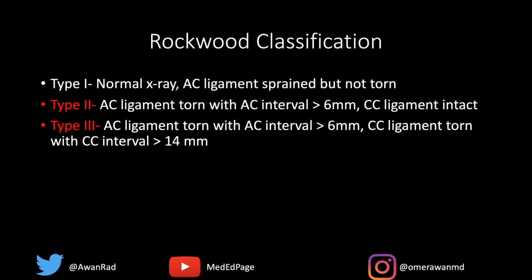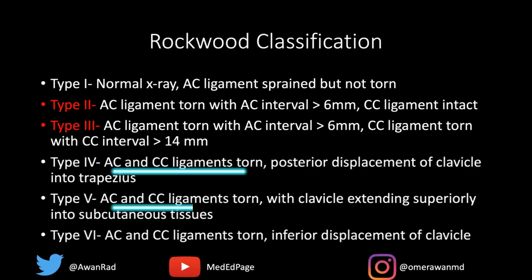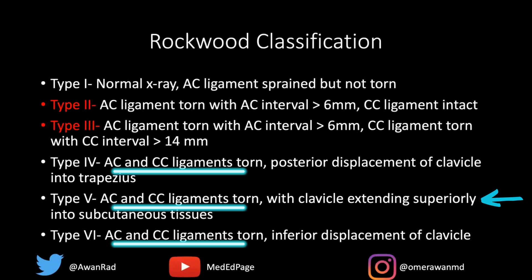Types 4, 5, and 6 are very rare — about 90% of cases we call are going to be type 2 and type 3. In types 4, 5, and 6, the AC and corticoclavicular ligaments are all torn. In a type 4, the clavicle goes posteriorly — it displaces posteriorly to the trapezius. A type 5 is like an exaggerated type 3, where the clavicle extends superiorly all the way to the subcutaneous tissues, almost coming to the skin surface. A type 6 is when, instead of superior displacement of the clavicle, there's inferior displacement of the clavicle, which can impinge on important structures. That's rare.